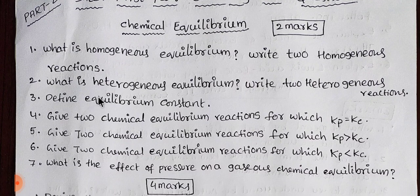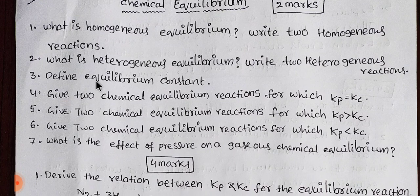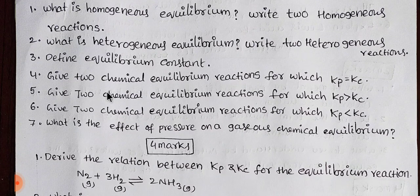There are two-mark questions: homogeneous and heterogeneous equilibrium examples, equilibrium constant. Next, Kc and Kp — Kp equal to Kc, Kp greater than Kc, Kp less than Kc — three conditions, with two-to-two example reactions. These three are easy.